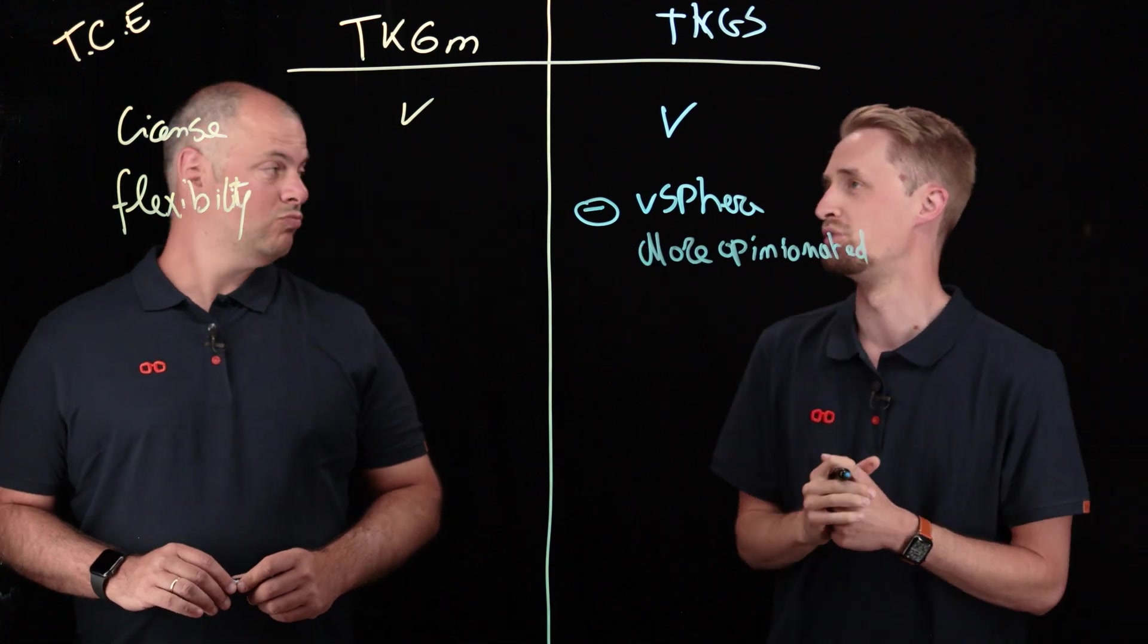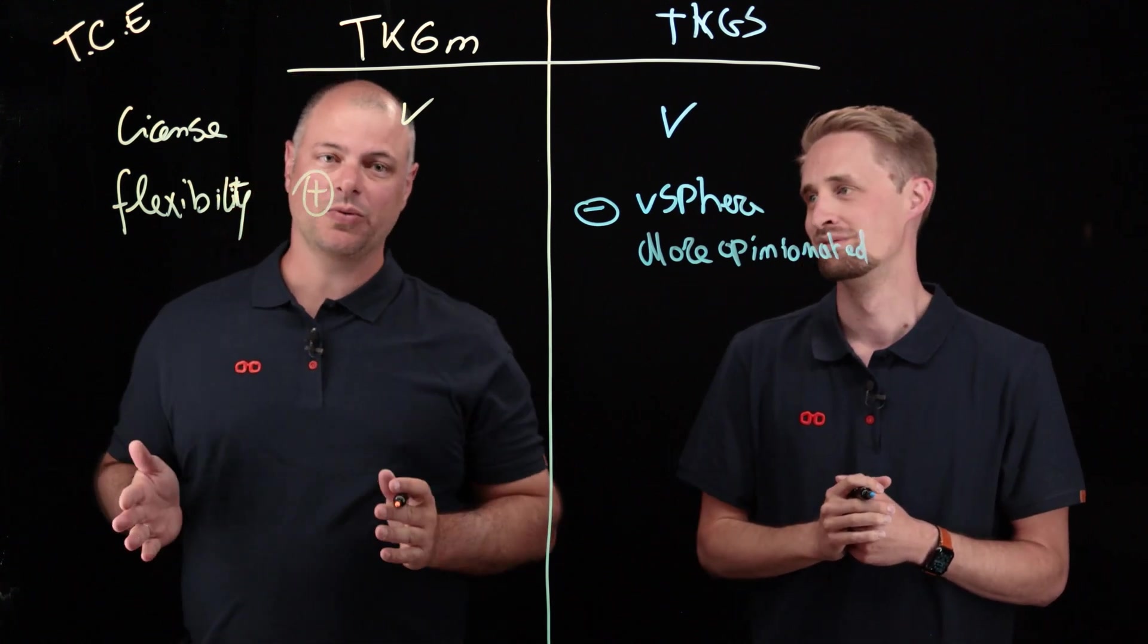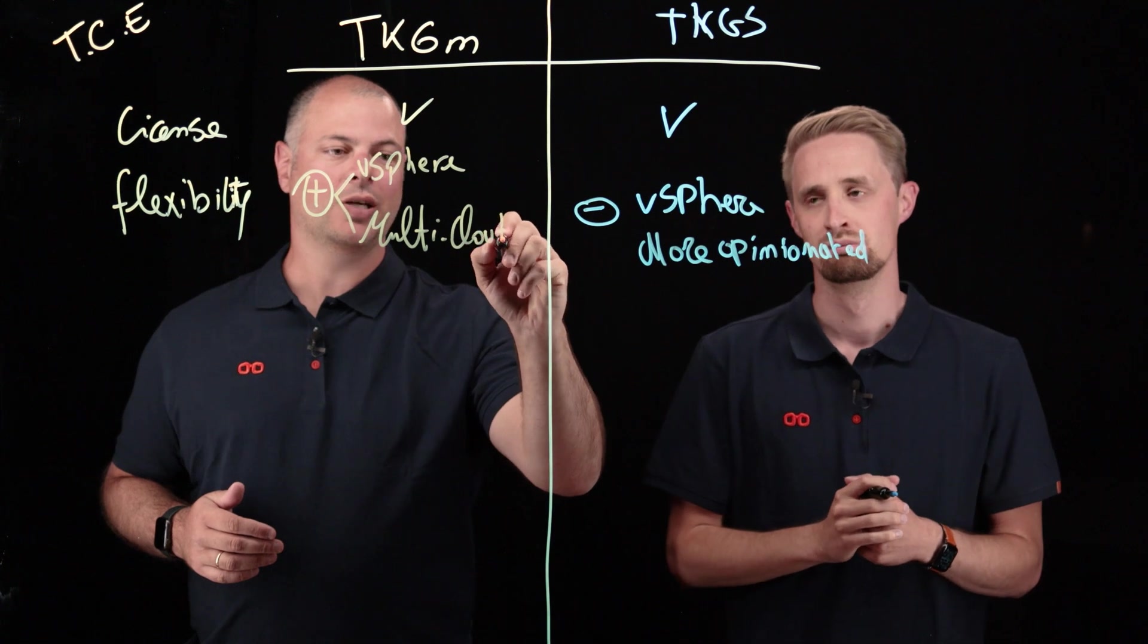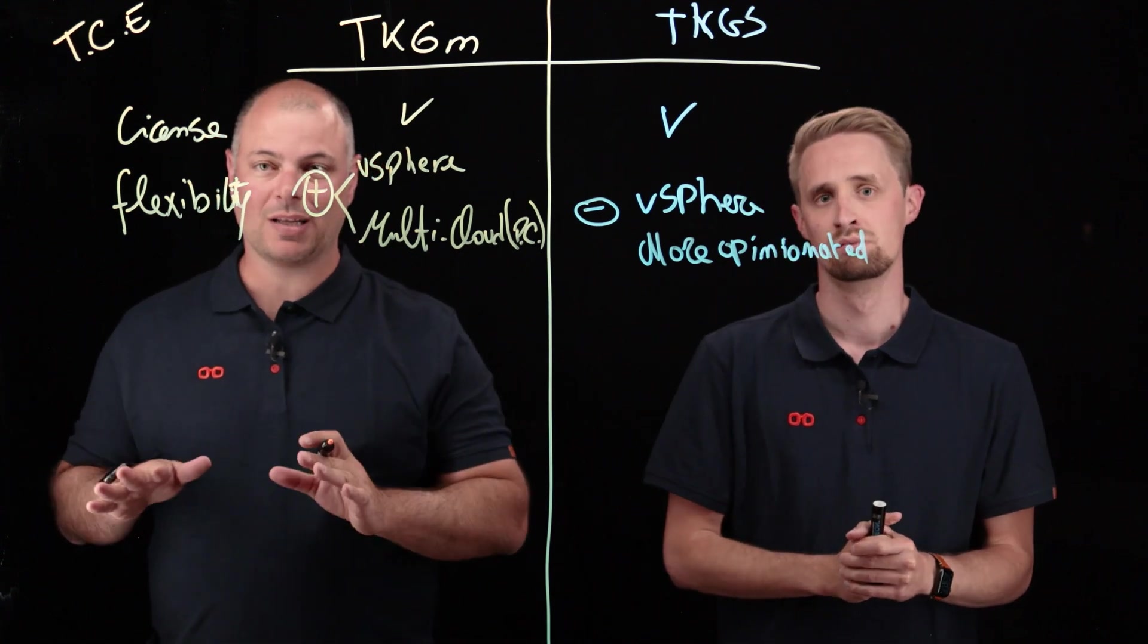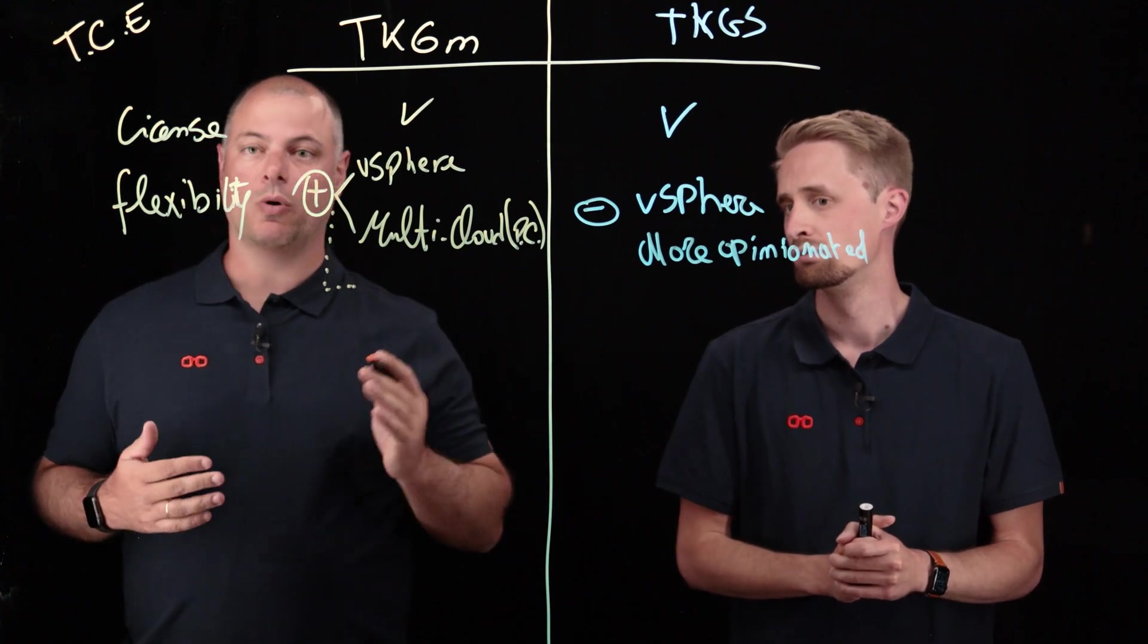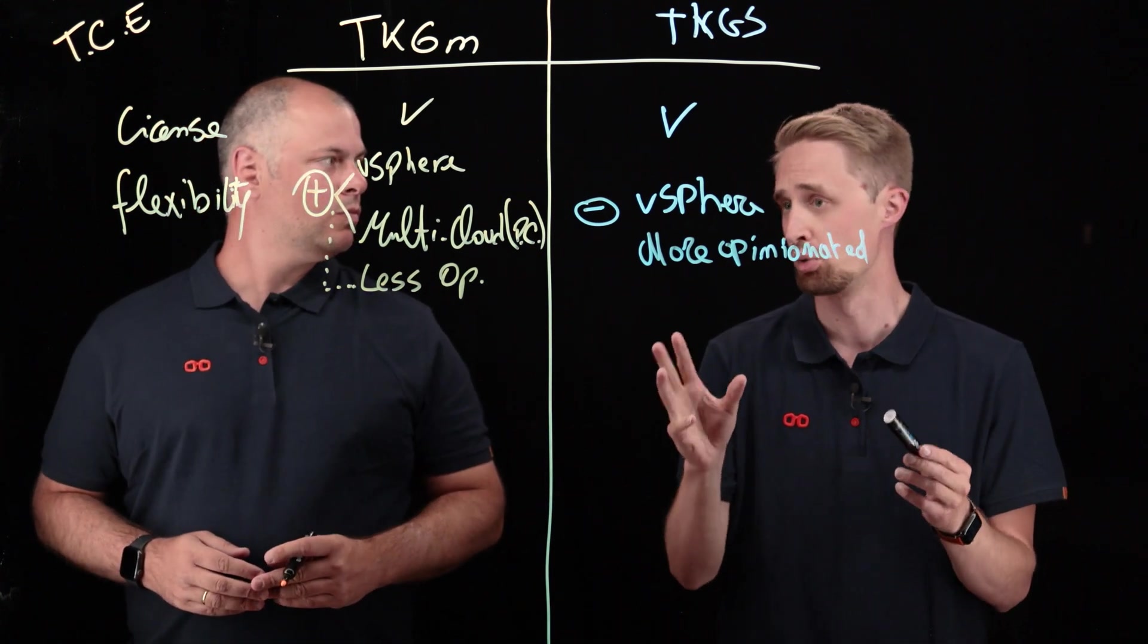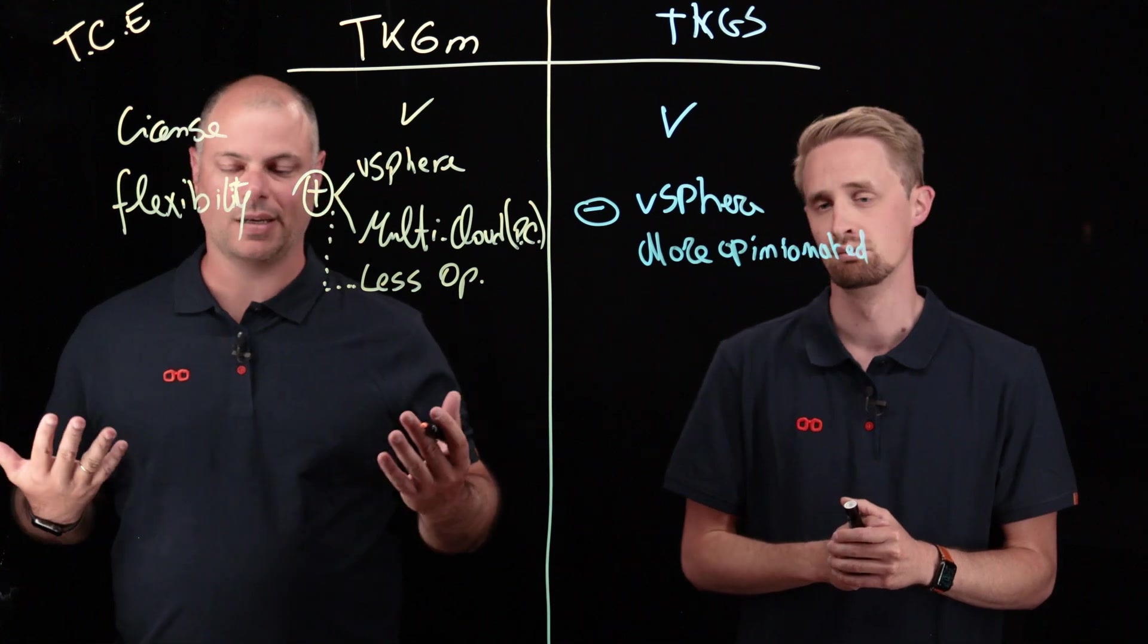Also, with TKGS or vSphere with Tanzu, there are some certain limitations that apply when you, for example, integrate it with NSX-ALB. Limitations that do not exist, for example, yet in TKGM. So that means, for us, in our experience, we believe that this solution is more opinionated compared to TKGM. So, José, can you tell a bit more about the flexibility of TKGM? Yes, so if one solution is a little bit less flexible, of course, the other one is going to receive a plus sign here. The reason we assign a plus sign here is that we can also do in a vSphere environment, the same as TKGS, but TKGM also allows us multi-cloud. So, let's say, in short, public clouds, and then you can run TKGM there.